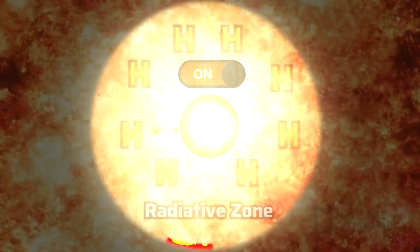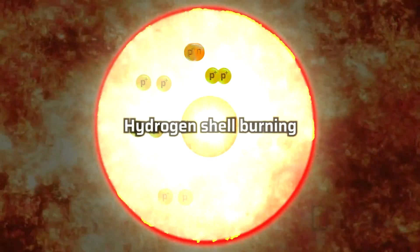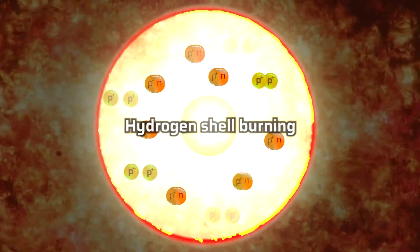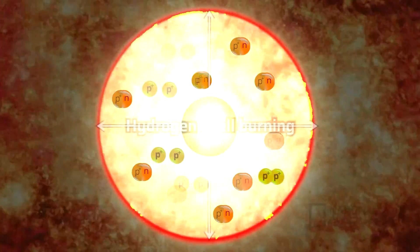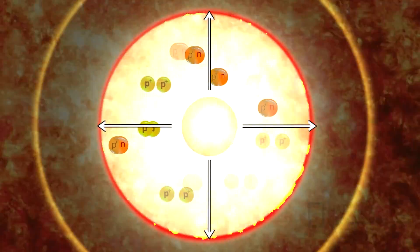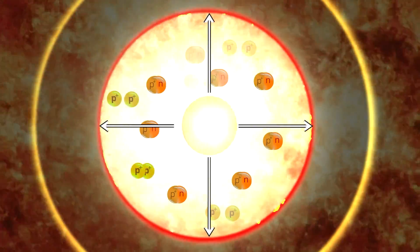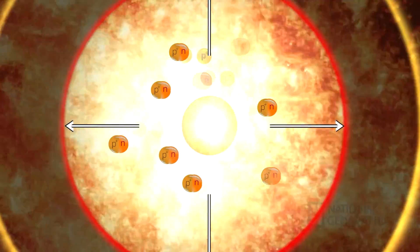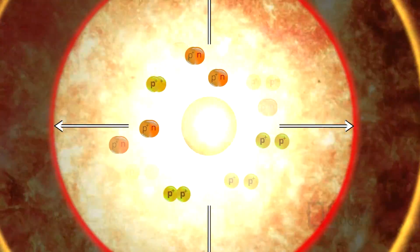The helium core will become a shell, so it will start to fuse hydrogen. There will be a fusion energy outward boost, which will expand the outer layer. Over time, the sun will get bigger and brighter.